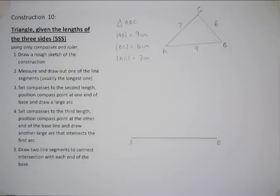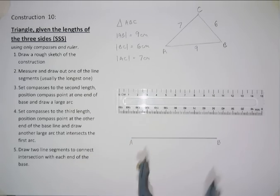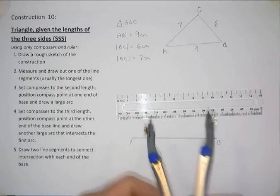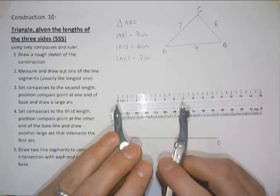We're going to do this more accurately. For this, we need a pair of compasses and a ruler. So we want to create two arcs that will intersect the correct point. Each arc is going to be a certain distance away from AB.